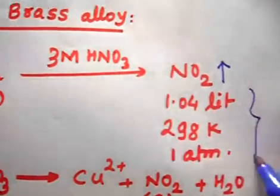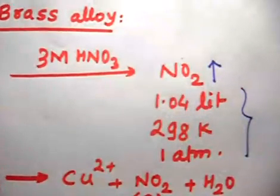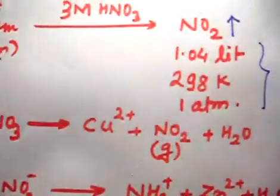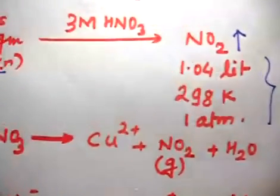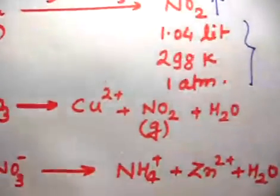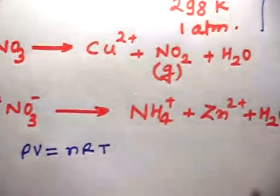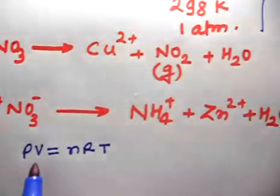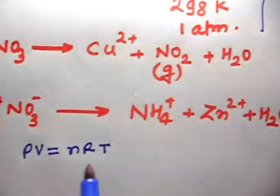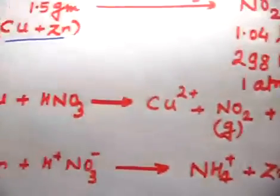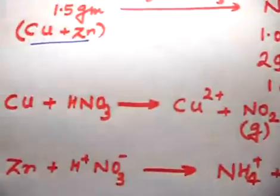Using these data, we can find the number of moles of NO2 released. If I apply PV = nRT, I know P, I know V, I know R and T, so I can calculate the number of moles of NO2. Let us proceed further for the problem — reactions are given to us.